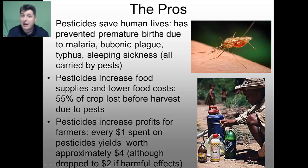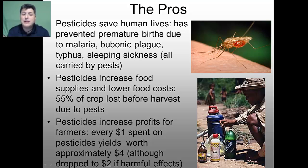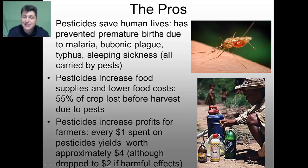The use of pesticides does have certain positives. By eliminating disease-causing and parasite-containing insects, it allows people to live longer in certain environments. By destroying the mosquitoes that carry malaria or the ticks that carry bubonic plague, we're able to save human lives. Pesticides can also increase food supplies and lower food costs — about 55% of crops are lost before harvest due to pests, so applying pesticides allows more crops to be harvested and increases profits for farmers. For about every dollar spent on pesticides, you get $4 of profit from the crops you harvest, though if the pesticide has harmful side effects, it reduces that overall profit in half.